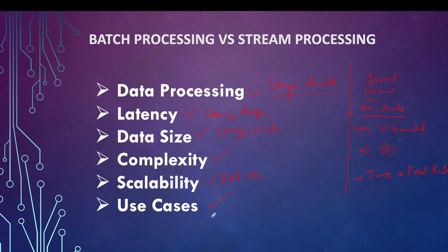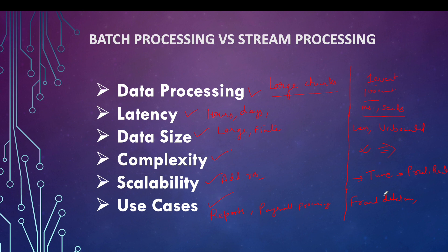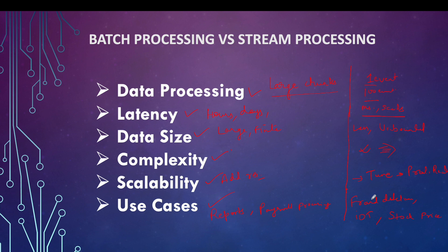For use cases, batch processing is very common for reports and payroll processing — for example, your monthly salary is processed by batch processing systems. For real-time or stream processing, common use cases include fraud detection, which must happen in real time: within seconds or milliseconds, the customer needs to be notified whether a transaction is fraudulent or valid. Other use cases include IoT sensor data analysis and stock price updates, all of which require very low latency.